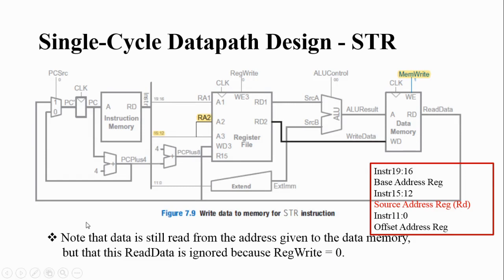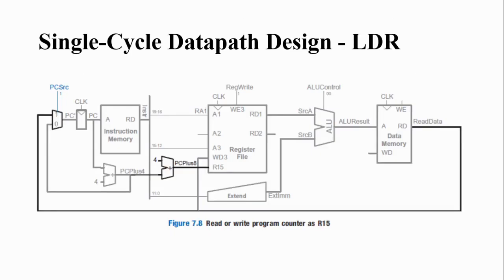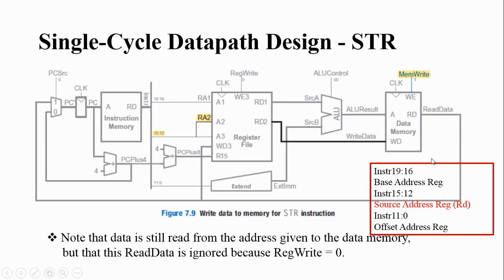The architectural data path and the data path design for store instruction is almost similar to the LDR instruction. The only difference is that in load you are loading from memory to a register — loading the content of data memory to a register through this line, and by using the data read from data memory you are writing to a register. But in store you are doing the opposite: whatever content of the register is there, that source register's content will be written to the data memory.